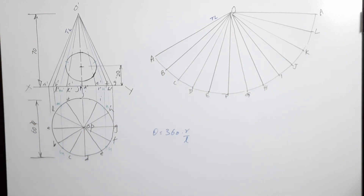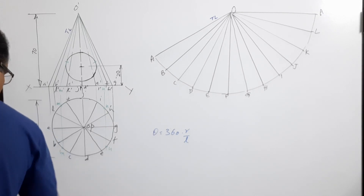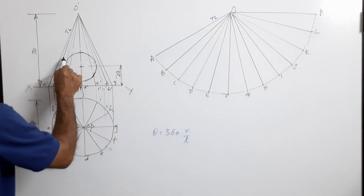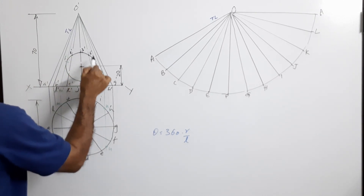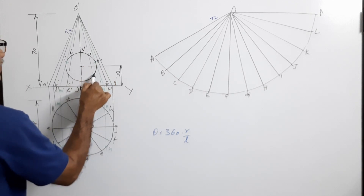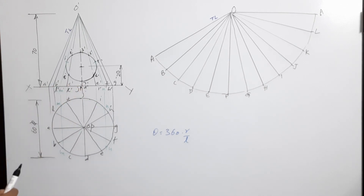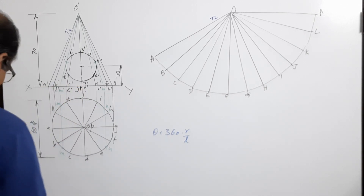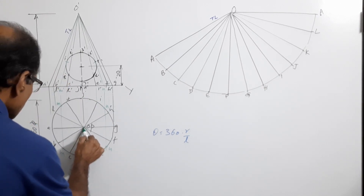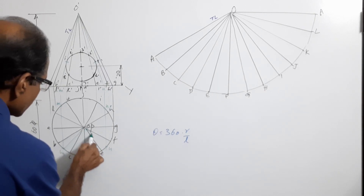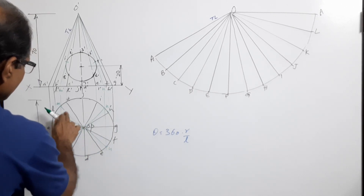The points of the hole are marked as one-dash, two-dash, three-dash, four-dash, five-dash, six-dash, seven-dash, eight-dash. Drawing o-dash m-dash gives generator om; drawing o-dash n-dash gives generator on — these are additional generators on the development.